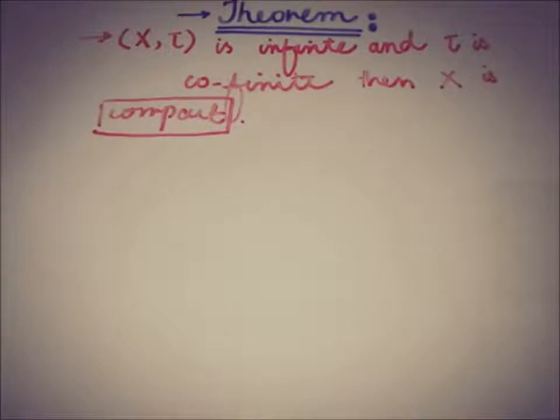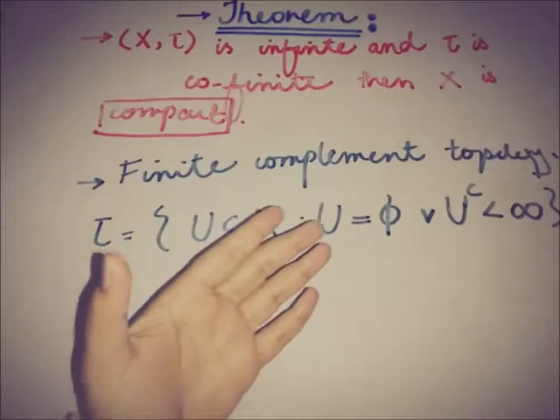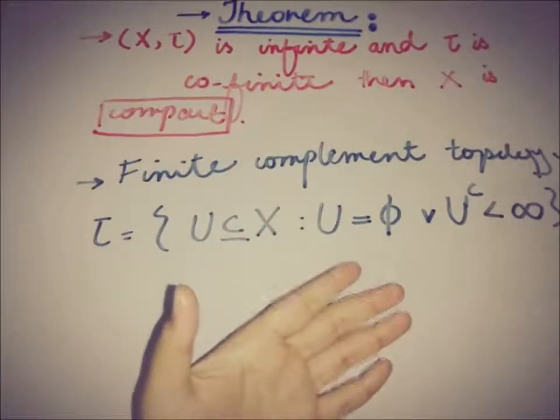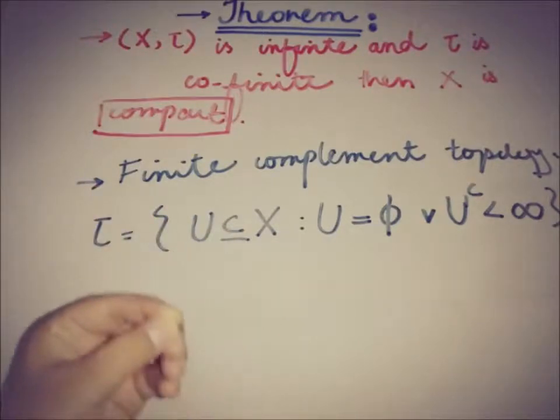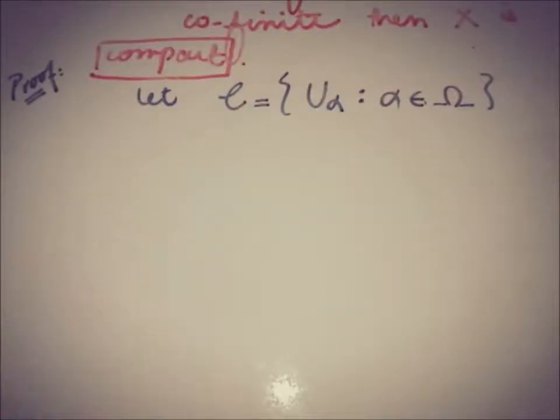So firstly, recalling the definition of the co-finite topology, that is also known as finite complement topology. A co-finite topology means that it contains more precisely any subset of X whose complement is finite. Less than infinity means that it is finite.